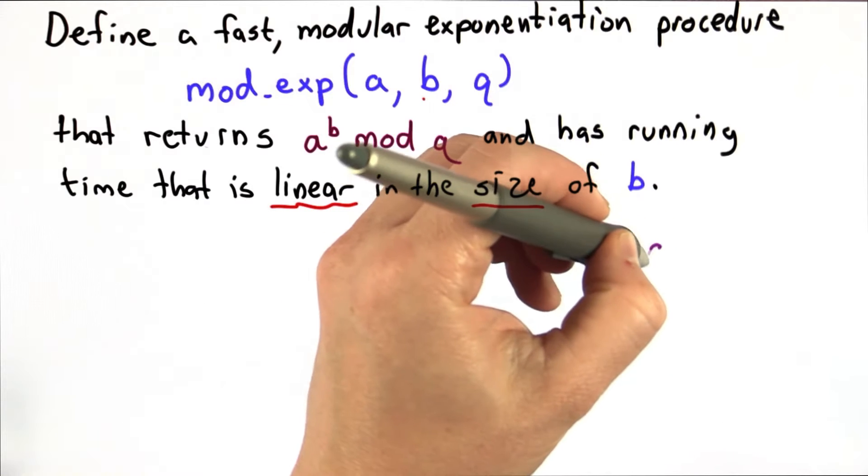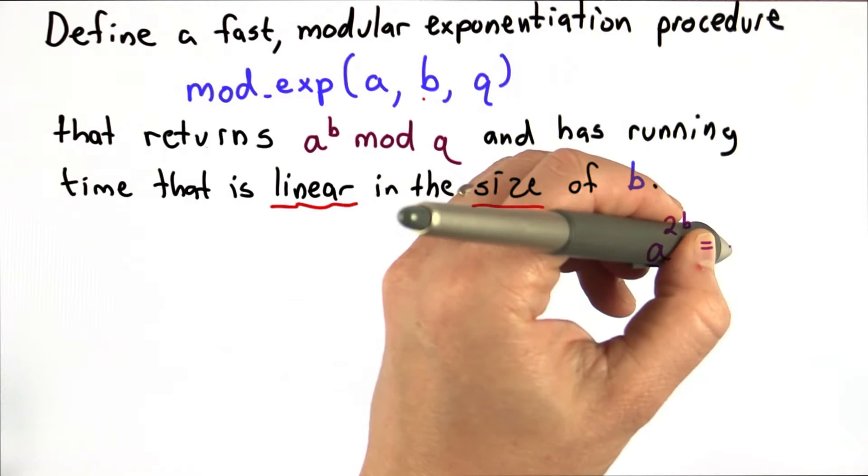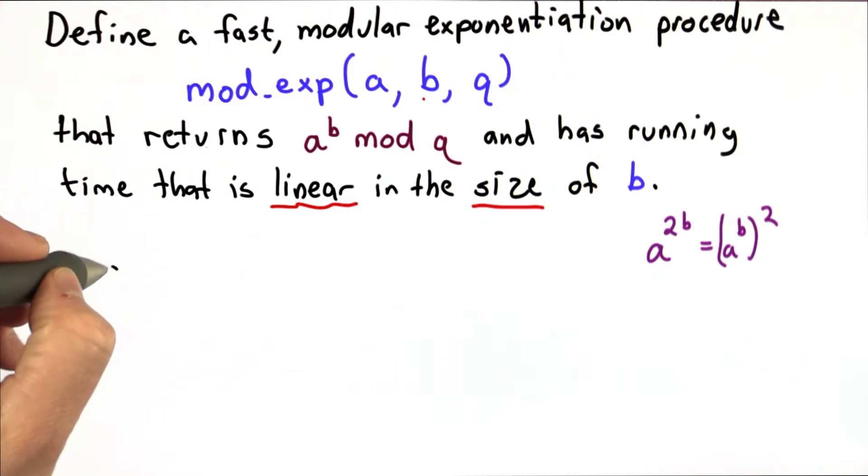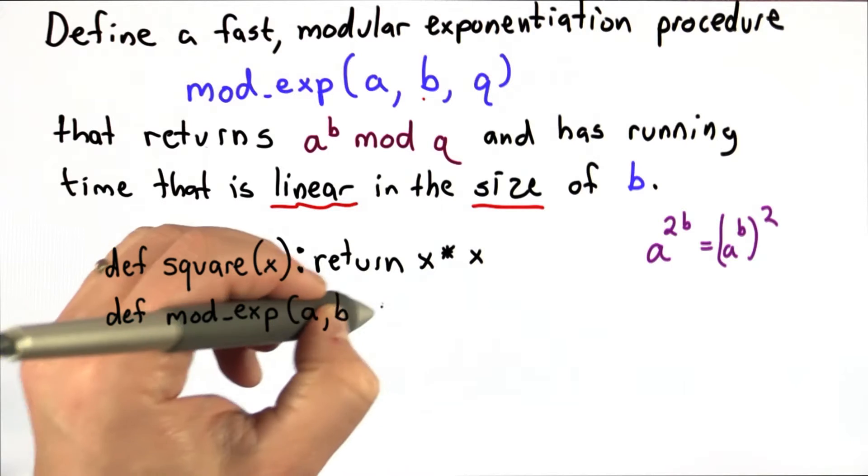So to do this, we're taking advantage of the property that a to the 2b is equal to a to the b squared. So let's first define a procedure to do squaring. And then we'll define our modular exponentiation procedure.